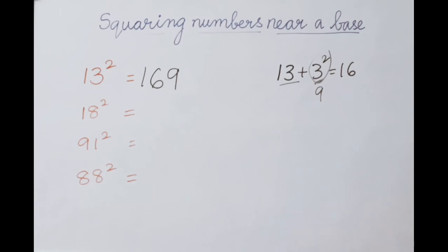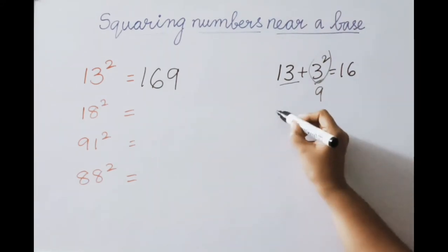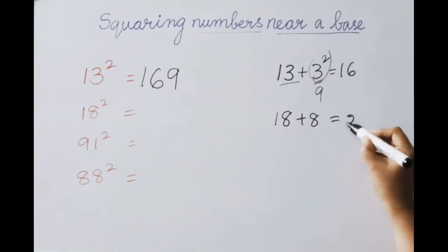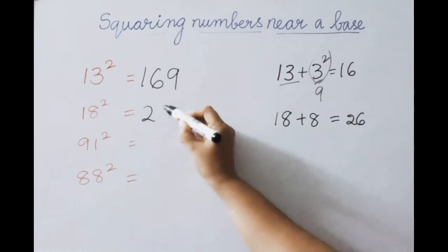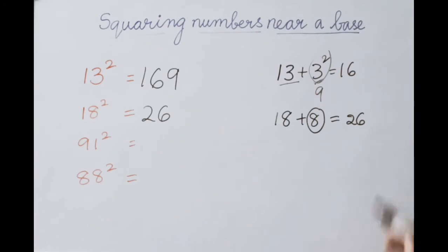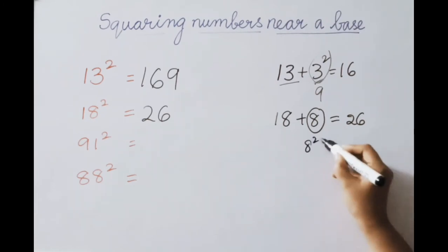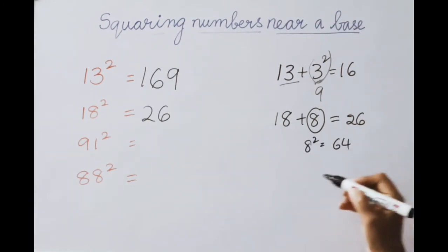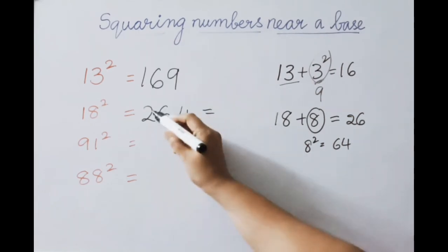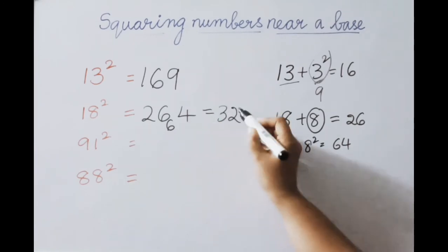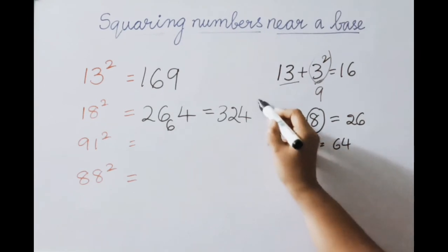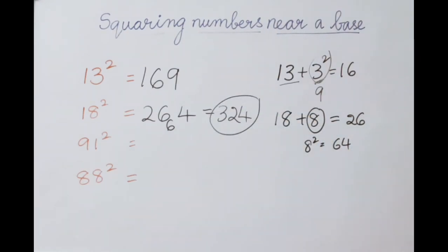For base 10, how much extra is 18 having? That is 8. So 18 plus 8 equals 26 — write down 26 as the first part answer. The excess value is 8, so 8 squared is 64. Write down 4 and carry 6. So 26 plus 6 is 32, write down 4. Therefore 18 squared equals 324.